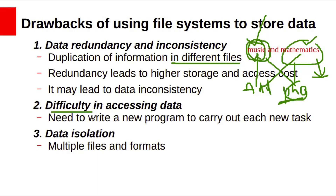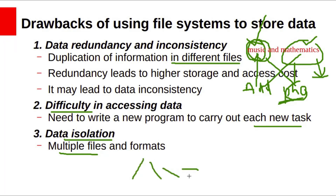Difficulty in accessing data: There is a need to write a new program to carry out each new task. In a flat file system, we have to read data line by line, which is difficult. Data isolation: Because data is scattered in various files that may be in different formats, writing new application programs to retrieve the appropriate data will be difficult. For example, a report on a student's class performance, library books details, and hostel information may all be in different files with different formats, making it very difficult to access all that information together.